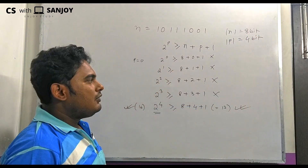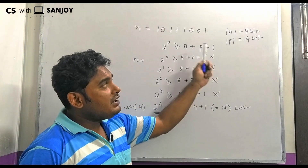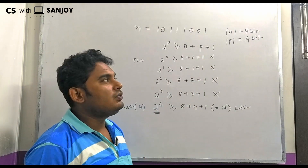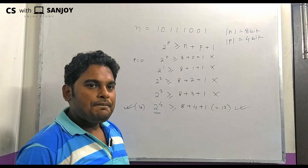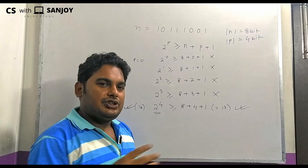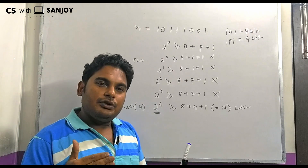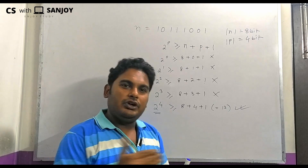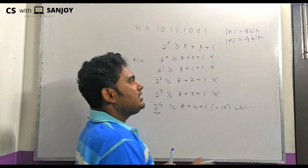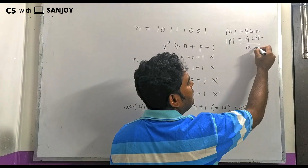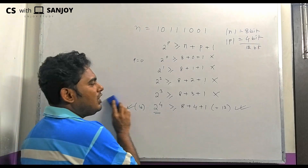So we can come to the conclusion that for 8-bit information, the Hamming bit calculation requires 4 Hamming bits. The original 8 bits are clubbed with the 4 redundant bits, giving us 12-bit information total.